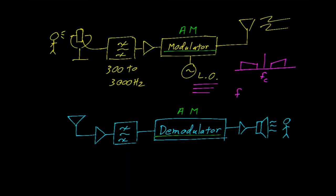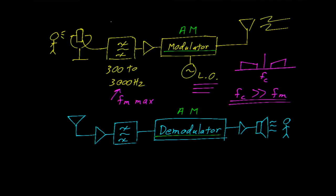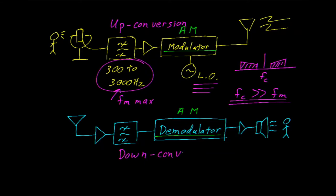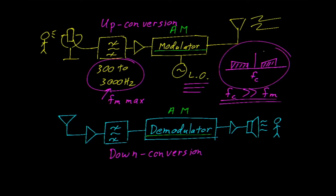Something to realize is that the frequency of the carrier is much greater than the frequency of the modulating signal. In this particular example, 3000 hertz is the maximum frequency of our modulating signal, which we call FM_max. The transmitter has performed an up conversion — it's taken this low frequency intelligence, otherwise known as a baseband frequency, and up converted it such that it rides with the carrier. The receiver does the exact opposite: it takes the high frequency carrier and sidebands and down converts them to recover the original audio. So we have up conversion in the transmitter and down conversion in the receiver.